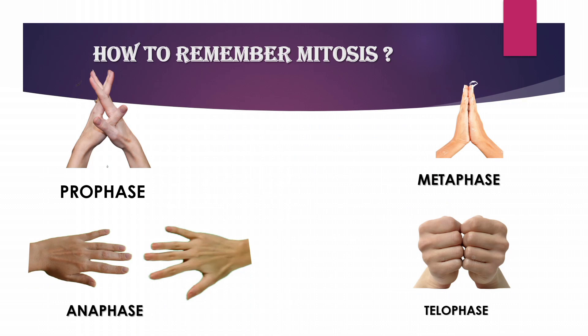How to remember mitosis easily: In prophase, chromosomes condense. In metaphase, chromosomes line up at the equator of the spindle. In anaphase, chromosomes separate and move to opposite poles. In telophase, there are two cells — which we call daughter cells. You can use your hands to remember this.